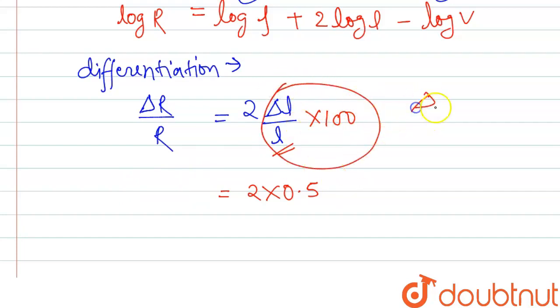If we multiply by 100, this term will become percent. This will be ΔL/L percent, so we can replace this with 0.5%, and here it will be...